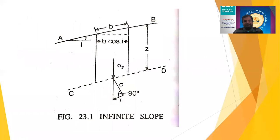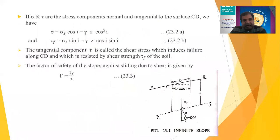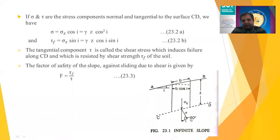σ_Z is resolved into two components: σ, which is perpendicular to the sliding plane, and τ, which is the shear stress parallel to the sliding plane. Based on angle I, σ = σ_Z·cos I = γ·Z·cos²I, and τ_F = σ_Z·sin I = γ·Z·cos I·sin I.